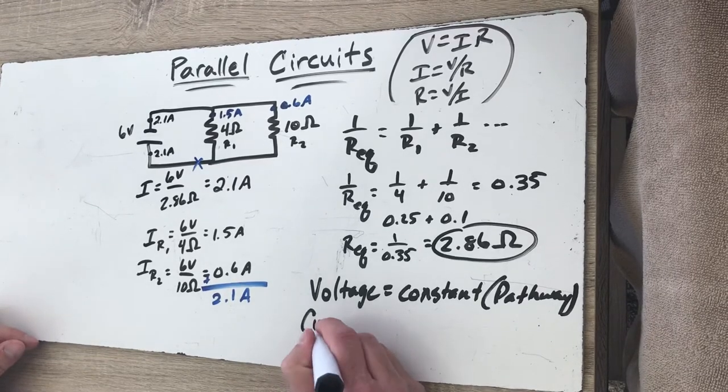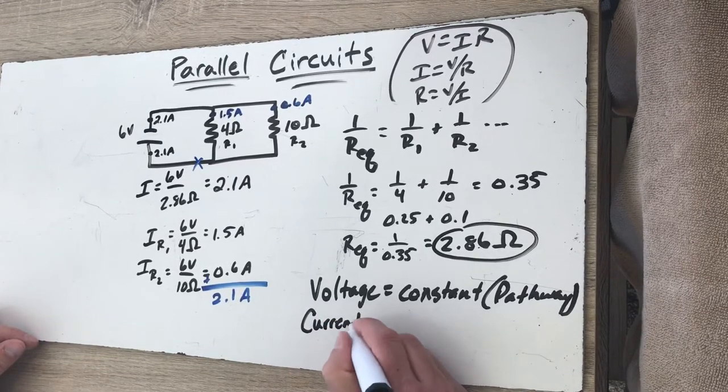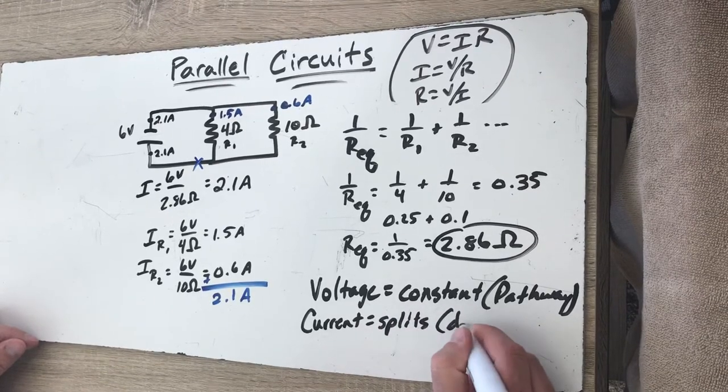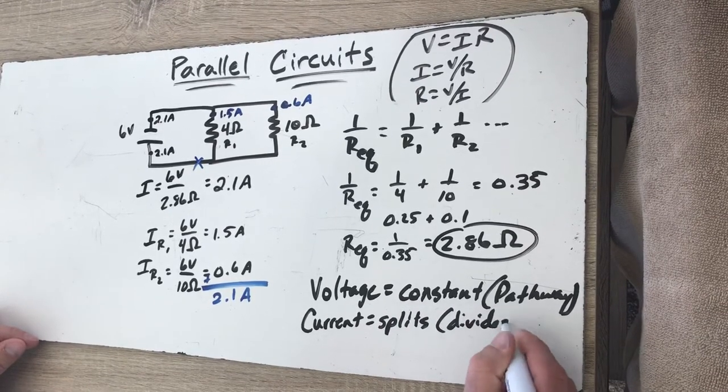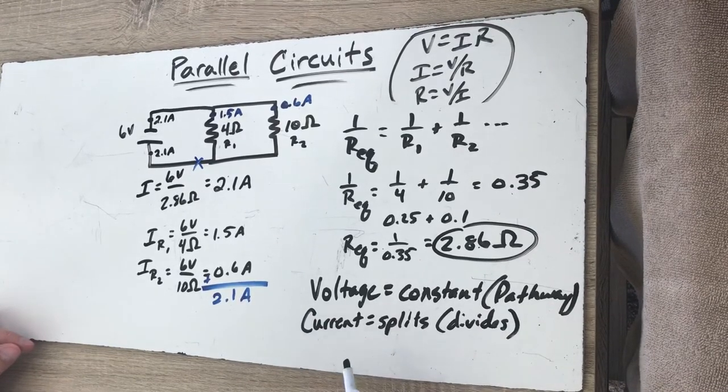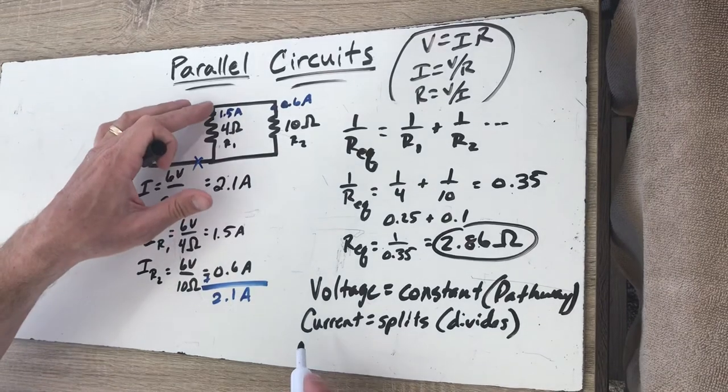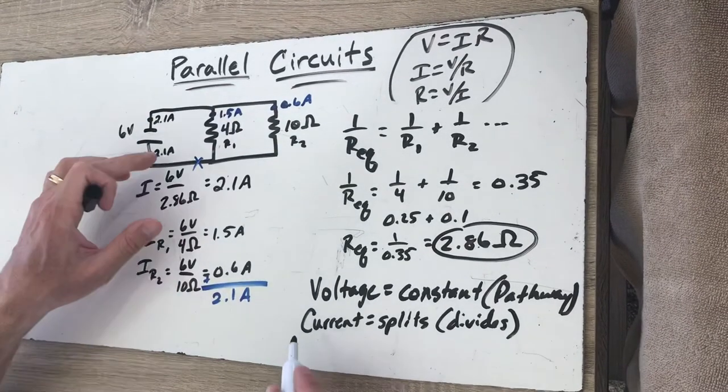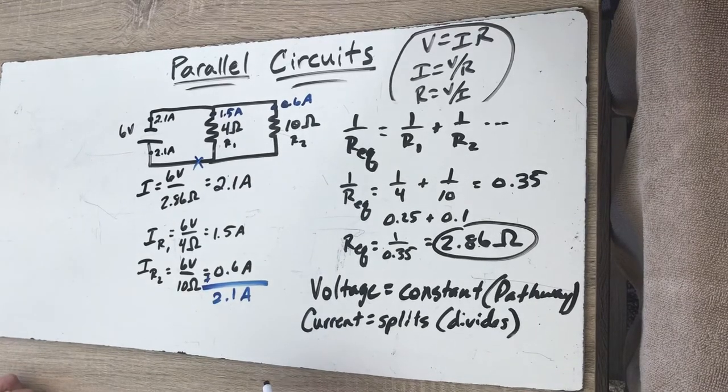The current, the current splits, and what we mean is it divides. The current divides. This is totally backwards from what we saw in the series circuit, it was completely reversed. The current divides up. More current flows through the less resistance pathway, but overall the total should still be the same at the very end.